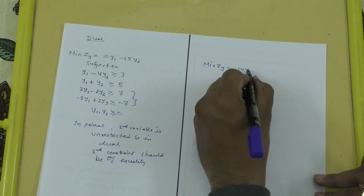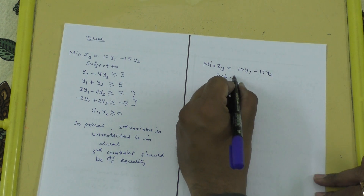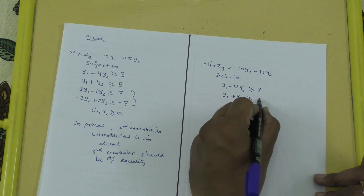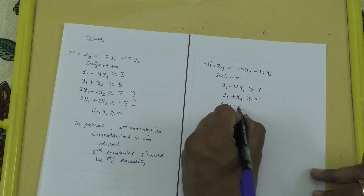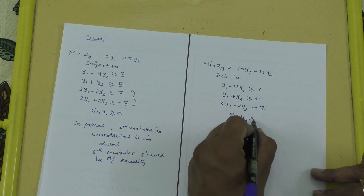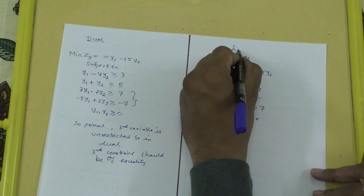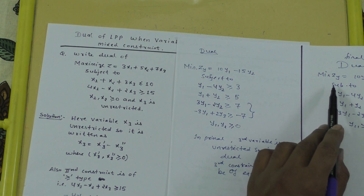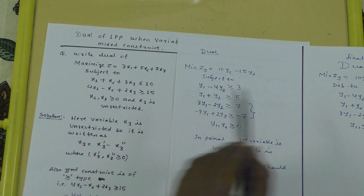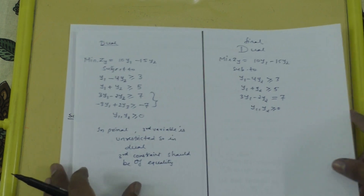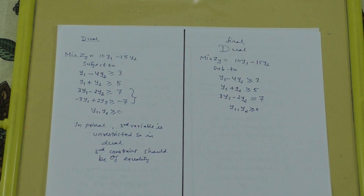The final dual problem is: minimize zy equals 10y1 minus 15y2, subject to: y1 minus 4y2 greater than or equals to 3; y1 plus y2 greater than or equals to 5; 3y1 minus 2y2 equals 7; and y1, y2 greater than or equals to 0. Note: the original primal has maximization and the dual has minimization. The third primal variable is unrestricted, so the third dual constraint is an equality. If you found this video helpful, please subscribe to our channel.